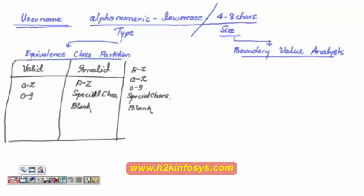Valid data means if the user enters valid data, we are going to allow him to login into the account. If he enters anything from the invalid side, we are going to stop him from entering into the account. Next we will come to the boundary value analysis. It is said that 4 to 8 characters is the acceptable range. Now the user can enter 10 characters, 50 characters, 20 characters. So how many different character lengths are we going to test? Should we test for 1 character, 2 characters, 3 characters, 4 characters? Is there a limit? 4 to 8 is valid, but he can enter even more than that — 10 characters, 20 characters, 3 characters, 2 characters — anything. So how many characters are we really going to test? Is it like 1 to infinity?